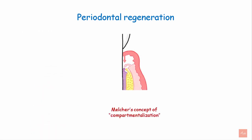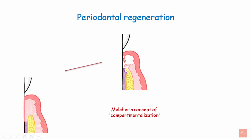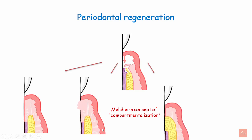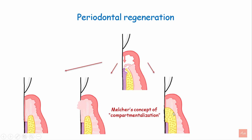Melcher introduced the concept of compartmentalization. According to him, the type of cell that populates the wound area will determine the nature of the attachment. So if the gingival epithelial cells arrive first at the site, it will lead to long junctional epithelium formation. If the connective tissue cell reaches the site, it will lead to root resorption. Likewise, if the bone cell reaches the site first, it will result in ankylosis without the existing periodontal ligament.